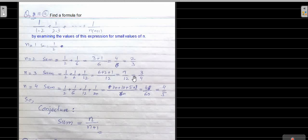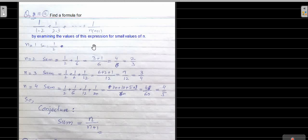We have a question — the 10th question — to find a formula: 1 over 1·2 plus 1 over 2·3 plus ... plus 1 over 10·12. We will find our formula by examining the values of this expression.